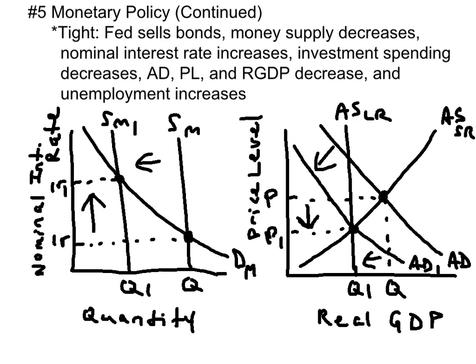When the economy is experiencing inflation, the Fed should pursue a tight monetary policy — that is, the Fed should sell bonds on the open market. This would decrease the money supply, increase nominal interest rates, decrease investment spending, decrease aggregate demand, price level, and real GDP, and increase unemployment. The money market graph shows the leftward shift of the money supply, increasing the nominal interest rate, which would reduce interest-sensitive spending such as investment spending, shifting aggregate demand to the left.